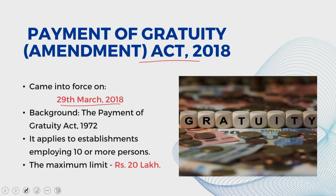Before implementation of the 7th Central Pay Commission, the ceiling under CCS Rules 1972 was rupees 10 lakh. However, with the implementation of the 7th Central Pay Commission for government servants, the ceiling was raised to 20 lakhs. Therefore, considering inflation and wage increases even for private sector employees, the government decided to revise the Gratuity entitlement for employees covered under the Payment of Gratuity Act 1972, increasing the maximum limit to such amount as may be notified by the central government from time to time — currently notified as 20 lakh.